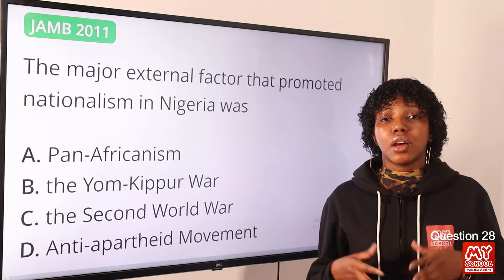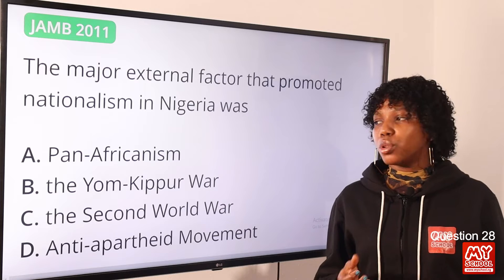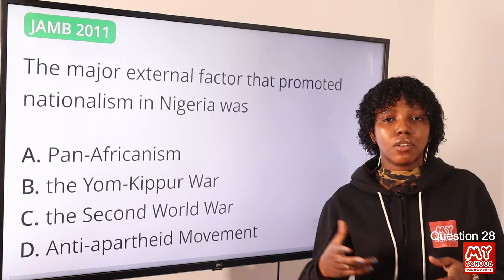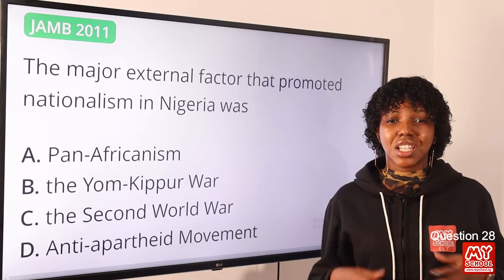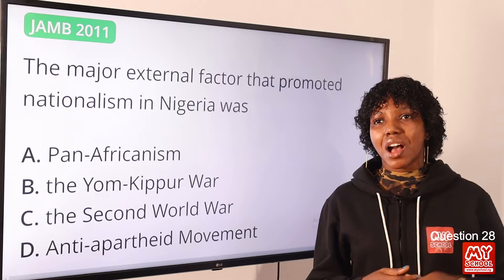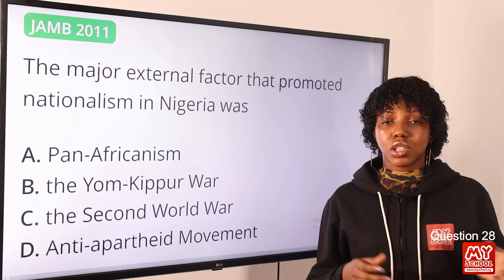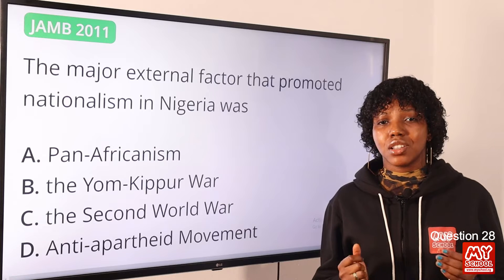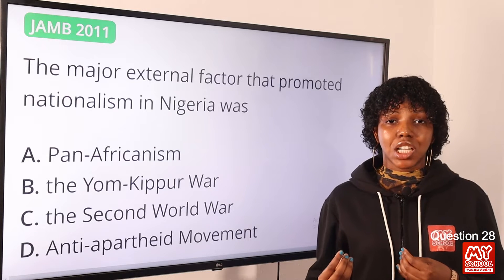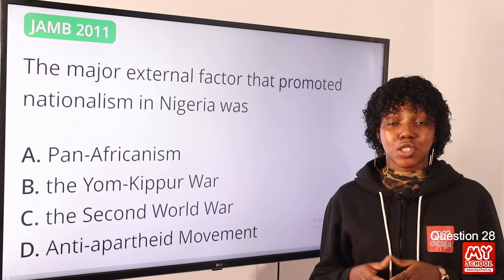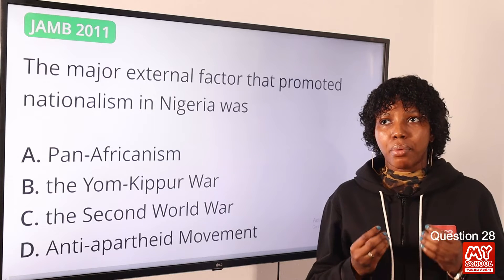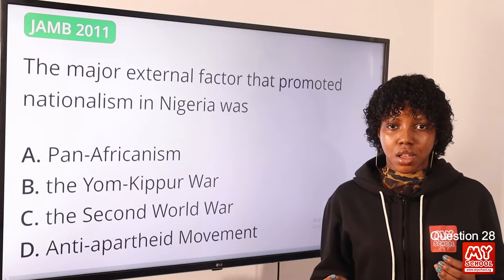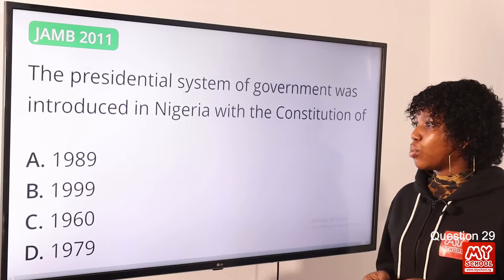Question 28: The major external factor that promoted nationalism in Nigeria was — the answer is pan-Africanism. Pan-Africanism is the common interest of people of African descent. Pan-Africanism and the Second World War are both external factors, but the major one is pan-Africanism because the activities of pan-African leaders and organizations inspired Nigerian nationalists. Leaders such as Du Bois and organizations like the West African Student Union and New Negro Movement inspired Nigerians. The answer is option A.